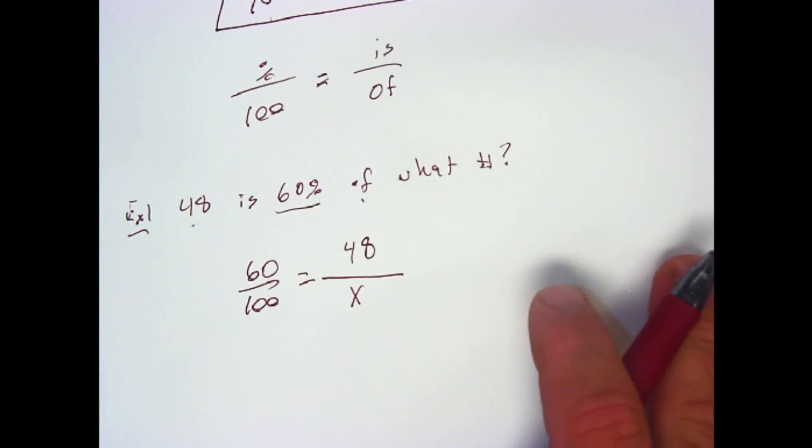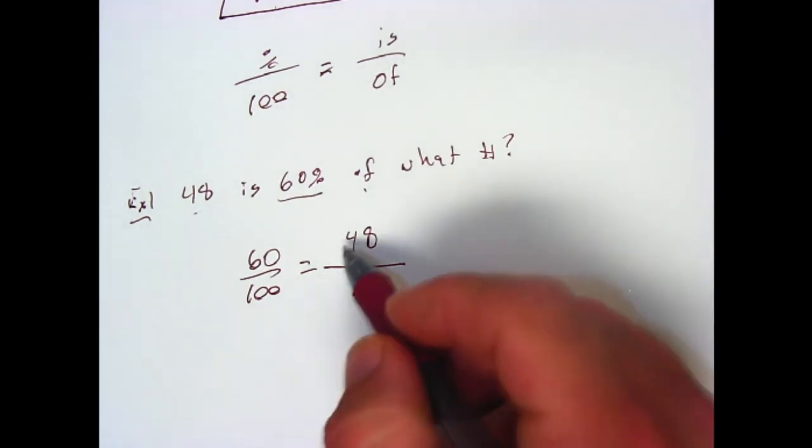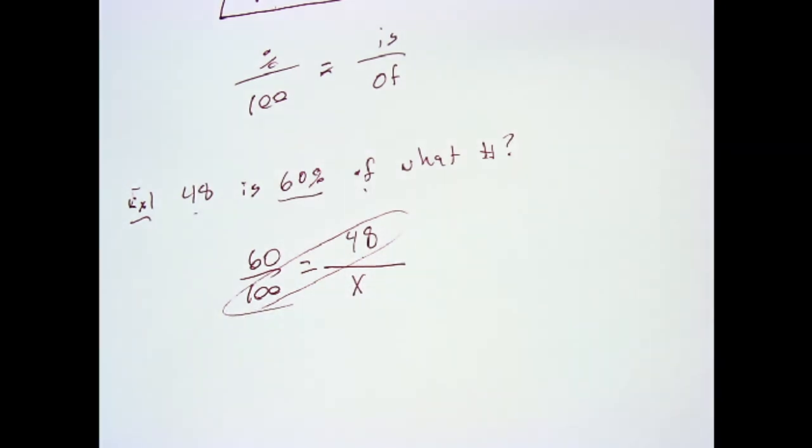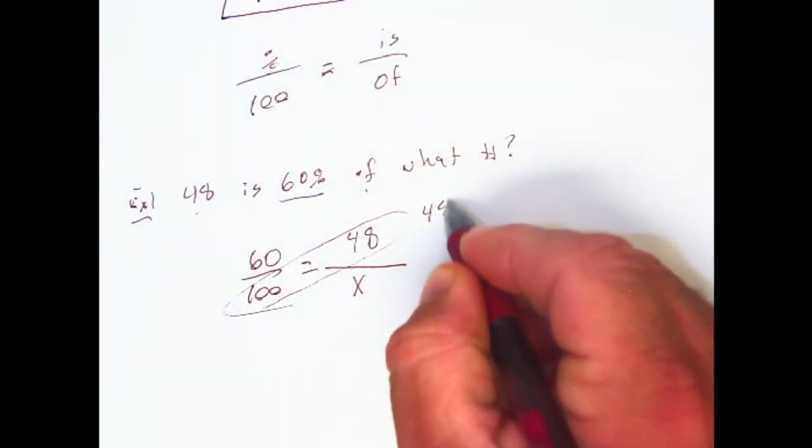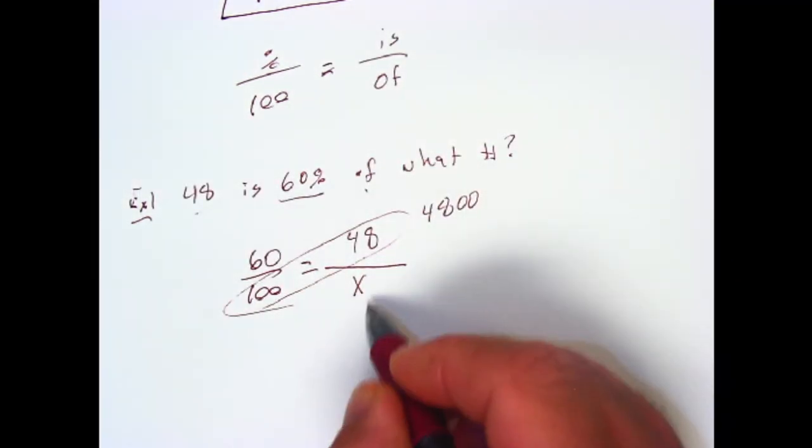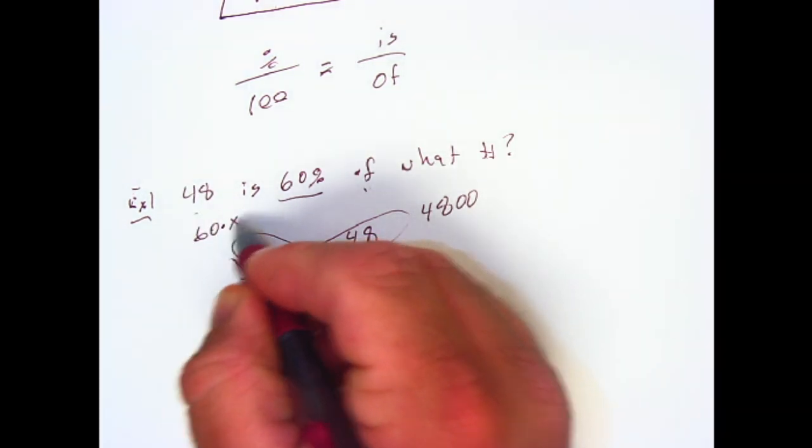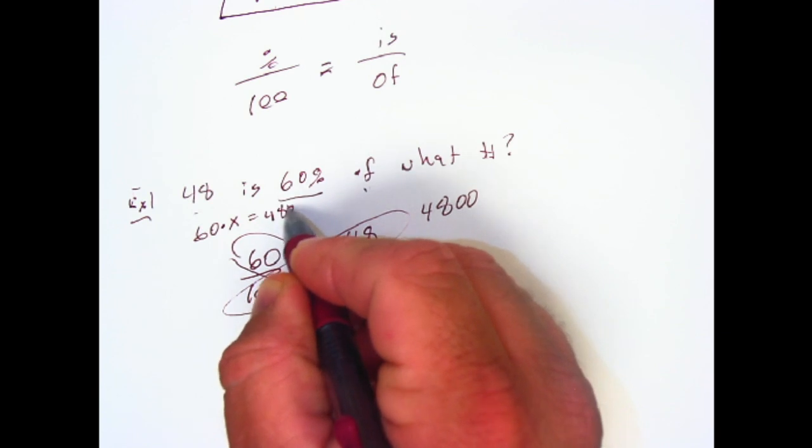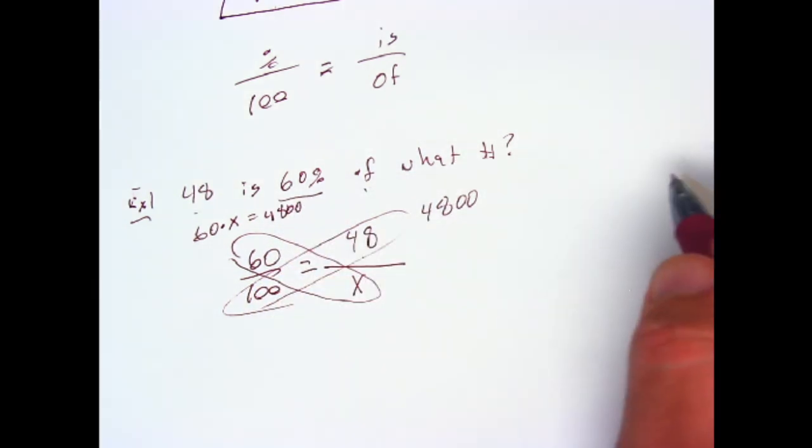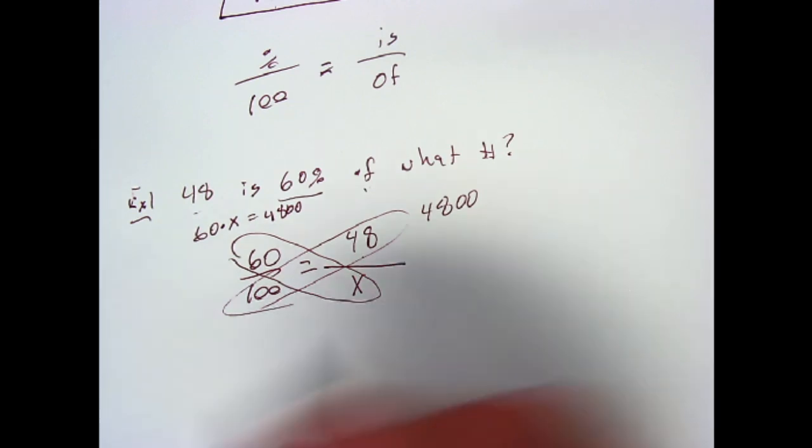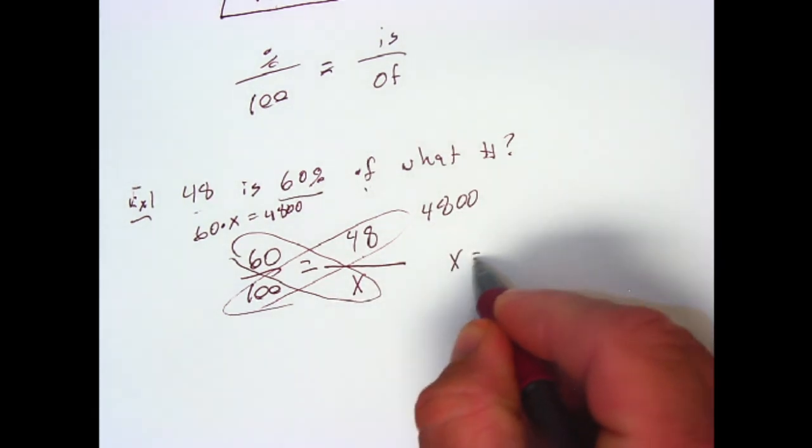And now it's just solving a proportion just like you've done it in the past. Cross multiplying, we get 48 times 100. And then we need to say this is 60 times what? Well, give me 4800. So we need to divide that 4800 by 60 and we get x equals 80.